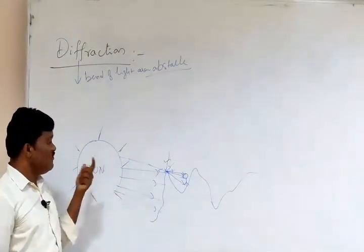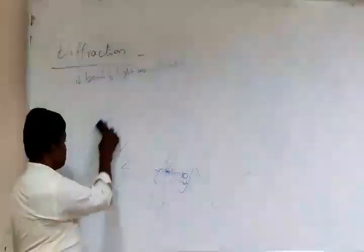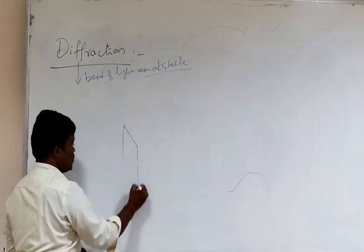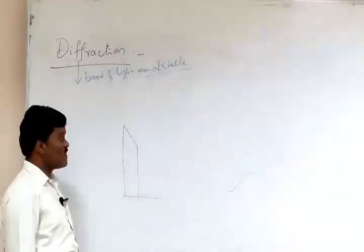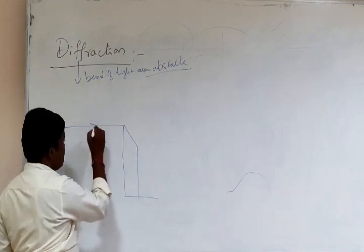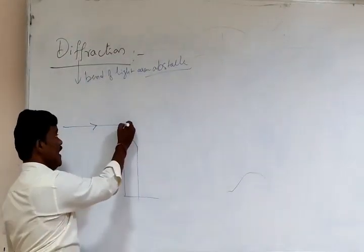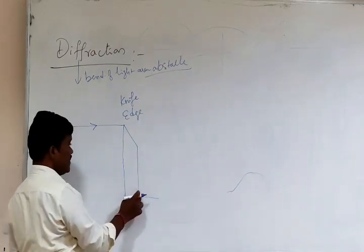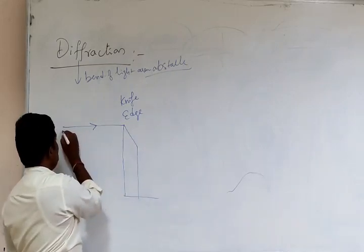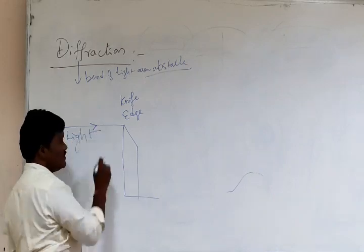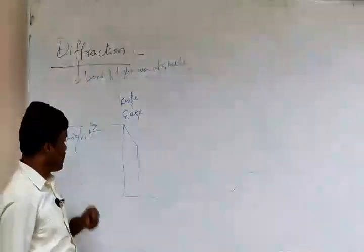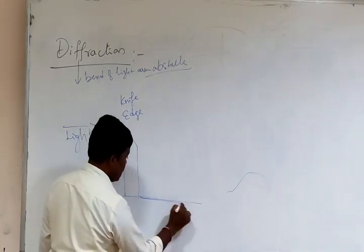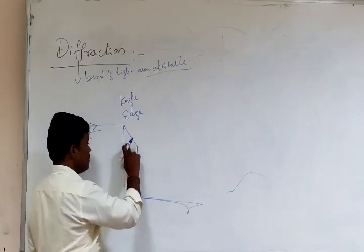Now take another kind of source with a sharp edge. There may be a parallel beam of rays falling on this edge — you can take this as a knife edge. When the light coming from left to right falls on the edge of the knife, what happens?